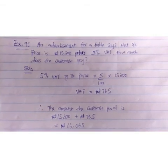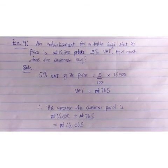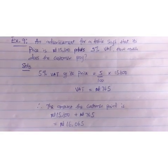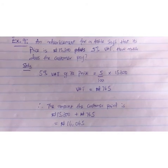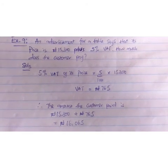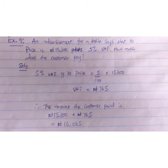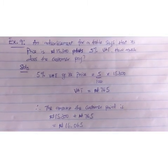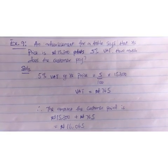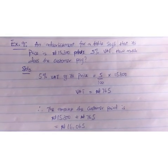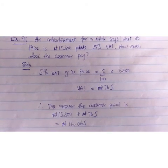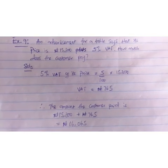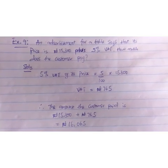Example 9: An advertisement for a table says its price is 15,300 naira plus 5% VAT. How much does the customer pay? In this case, 5% VAT of the price will be 5% times 15,300, which is 5 over 100 times 15,300, leaving us with 765 naira — that is the VAT amount. The amount the customer pays, including VAT, would be 15,300 plus 765 naira, leaving us with 16,065 naira.